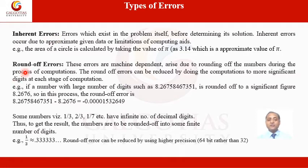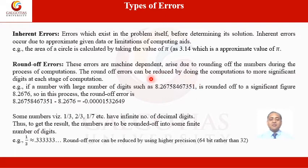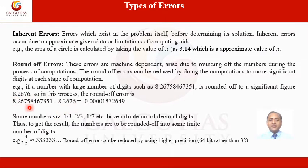The next type is round-off error. As the name suggests, this error arises due to rounding off numbers during the process of computation. For example, if a number has too many decimal places, we approximate it to 3 or 4 decimal places. The difference between the exact value and the approximated value, such as 8.2676, is called the round-off error.